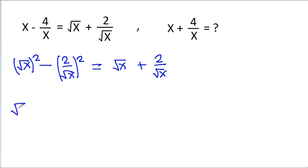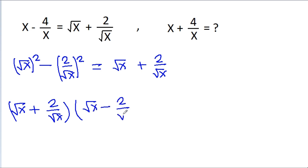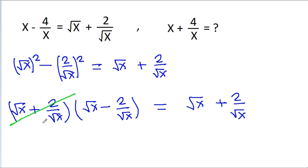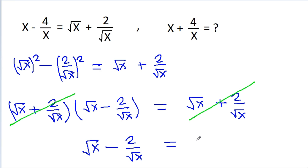So we can get root x plus 2 by root x times root x minus 2 by root x, which equals root x plus 2 by root x. The root x plus 2 by root x terms cancel, and we get root x minus 2 by root x is equal to 1.